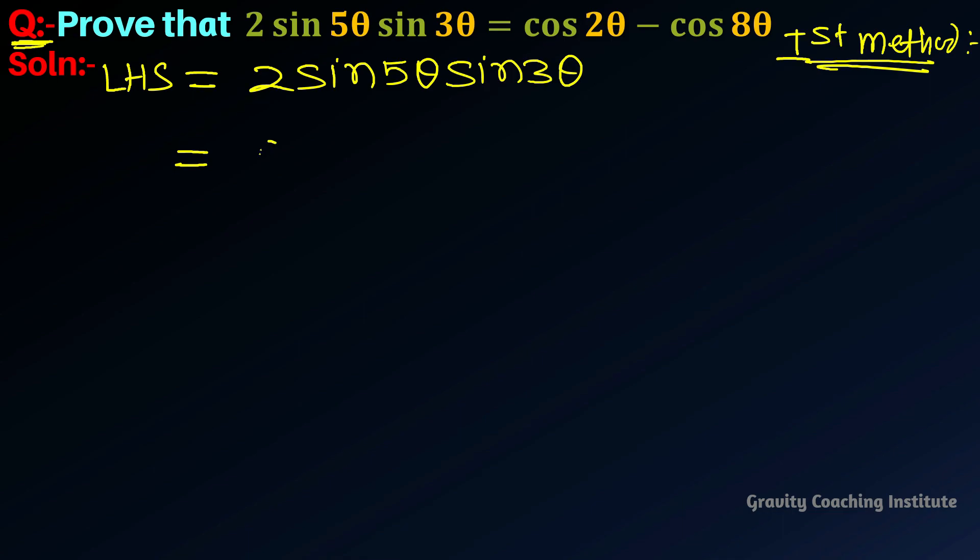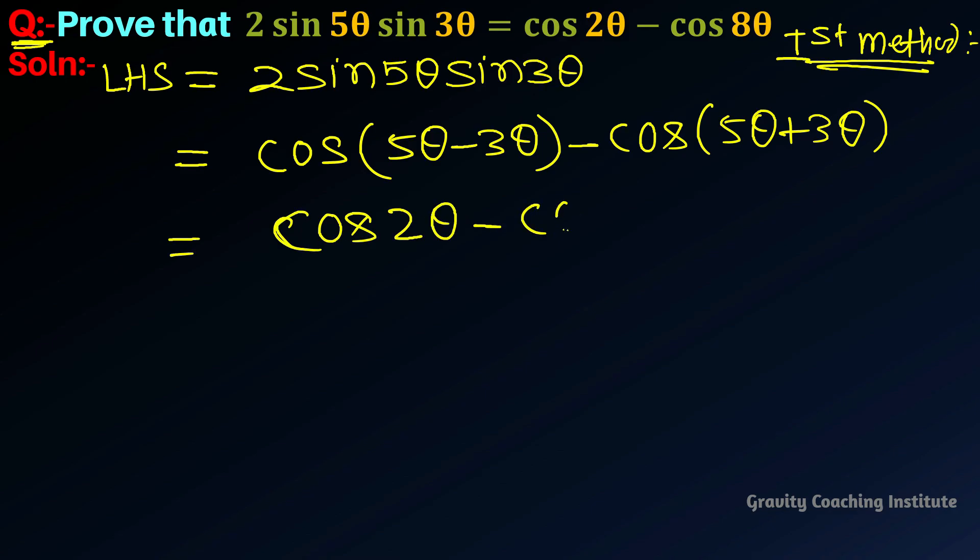This will become cos(5θ - 3θ) - cos(5θ + 3θ). So equal to cos 2θ - cos 8θ = right-hand side. Hence proved.